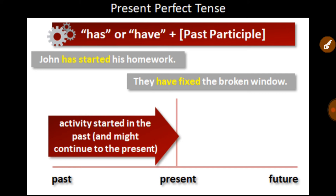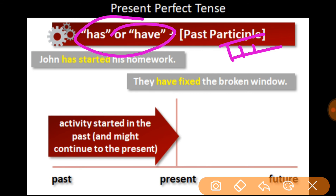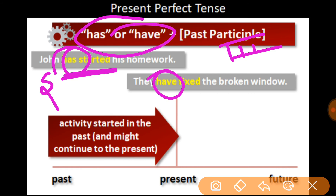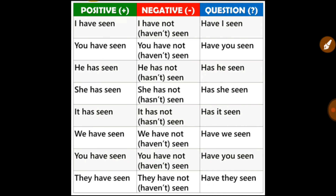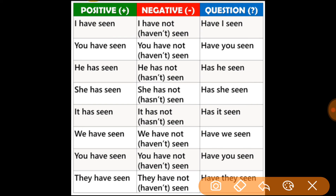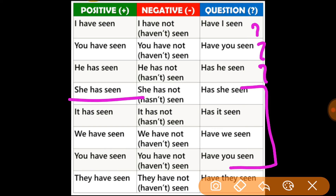Next, present perfect tense — the rule I have already told you: has or have plus the past participle, that means the third form. In positive: 'I have seen.' Negative: 'I have not seen.' Interrogative: 'Have you seen?' He uses 'has': 'He has seen,' 'Has he seen?'